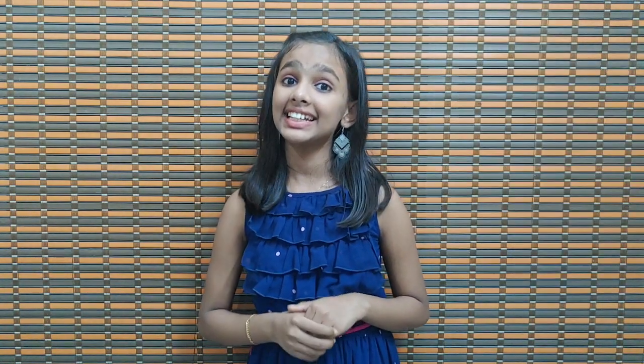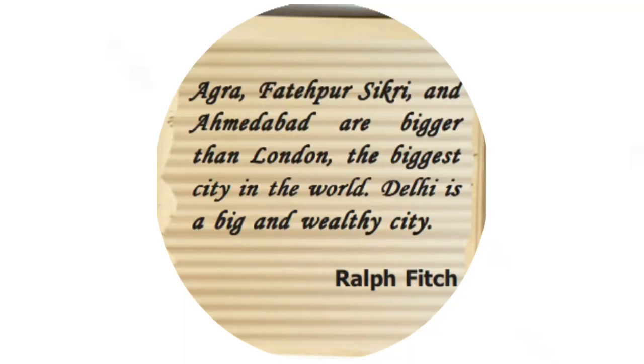We have another description by Ralph Fitch, an English traveller who reached India in the Mughal period: 'Agra, Fatehpur Sikri and Ahmedabad are bigger than London, the biggest city in the world. Delhi is a big and wealthy city.' He is saying that Agra, Ahmedabad and Fatehpur Sikri are bigger than London, and he also describes Delhi as a big and wealthy city.